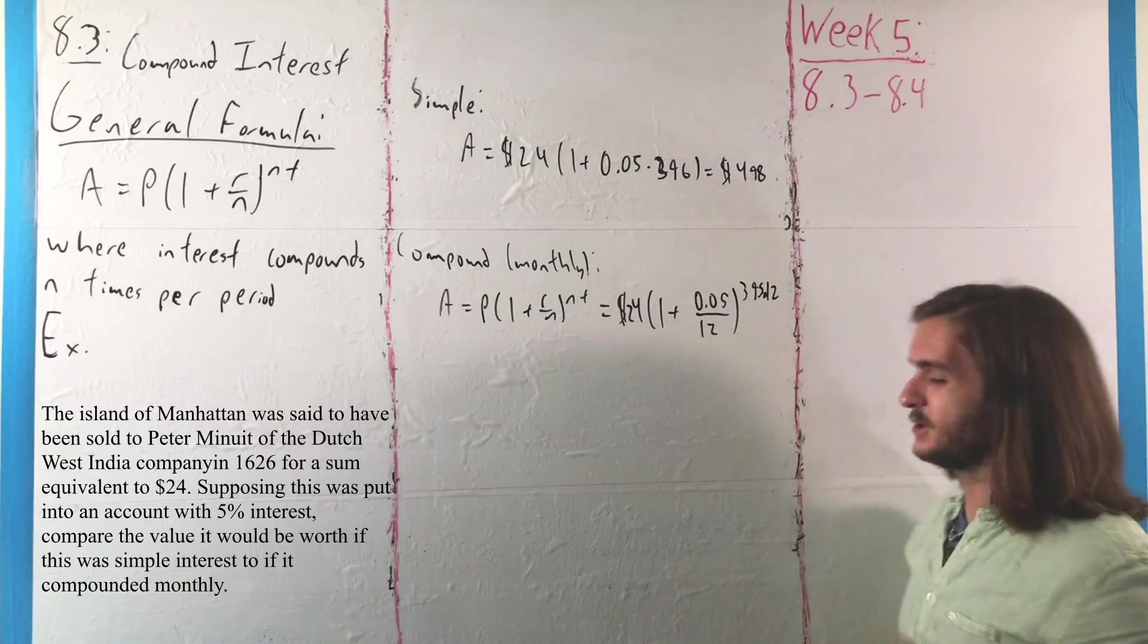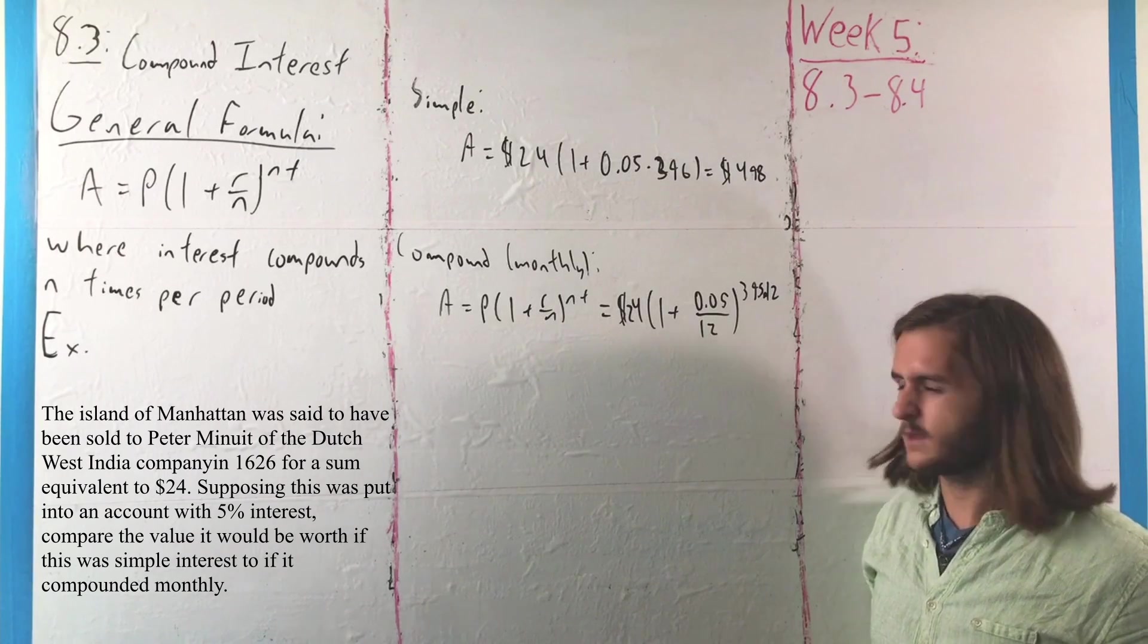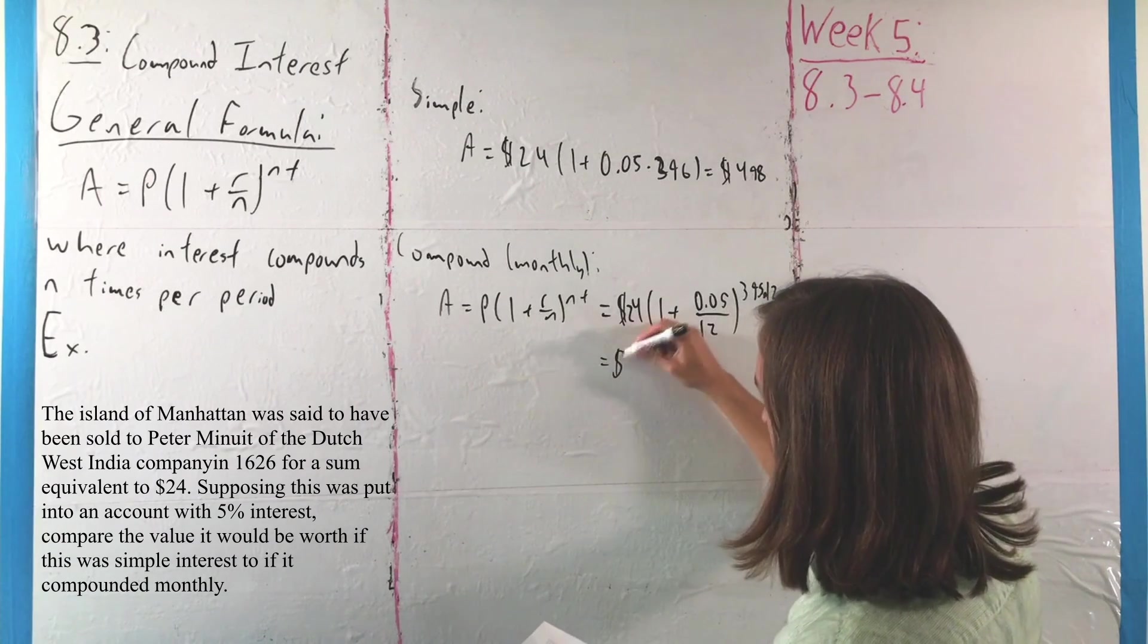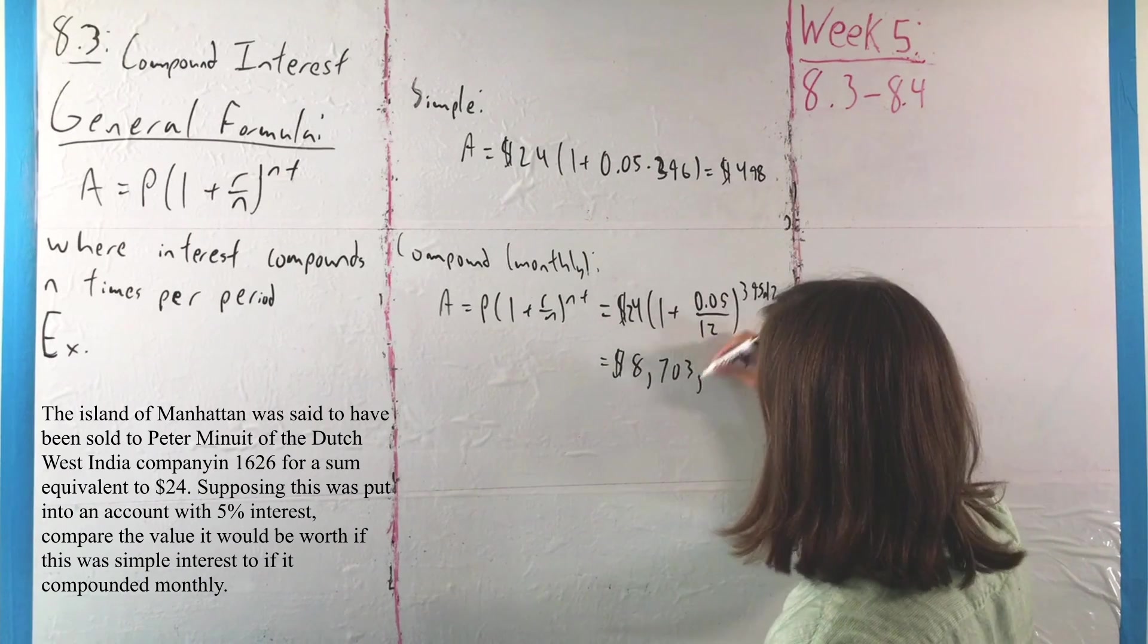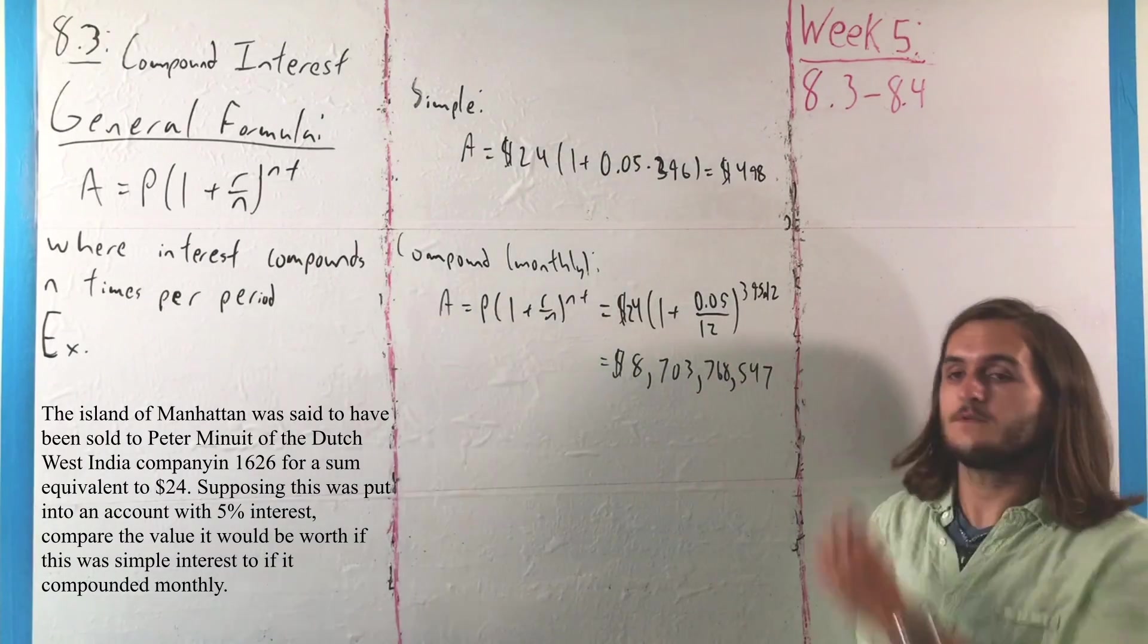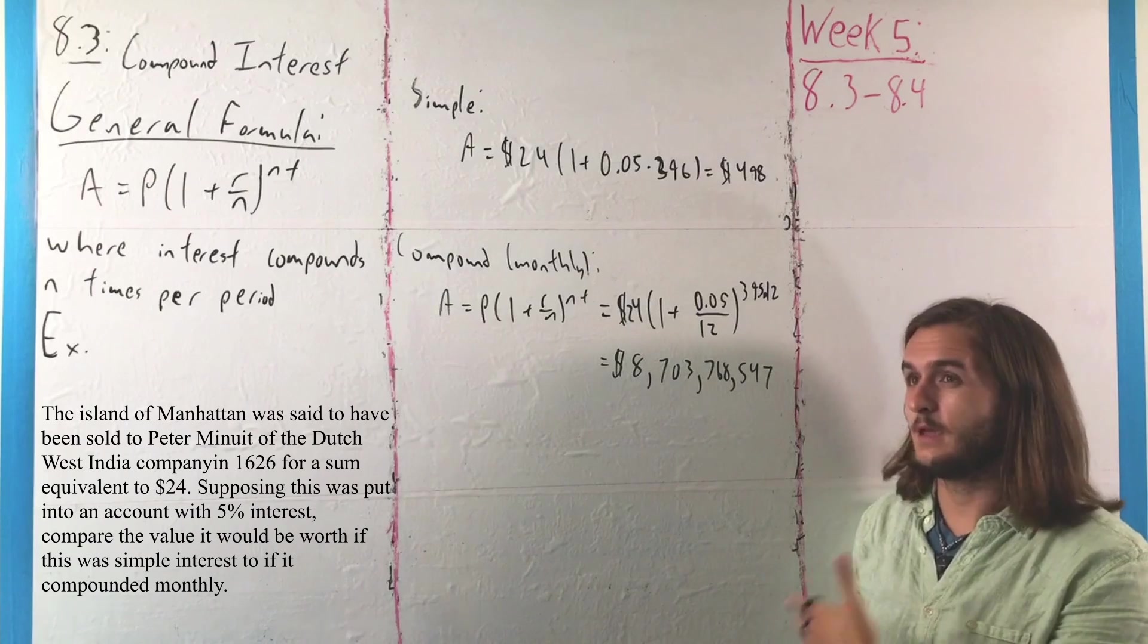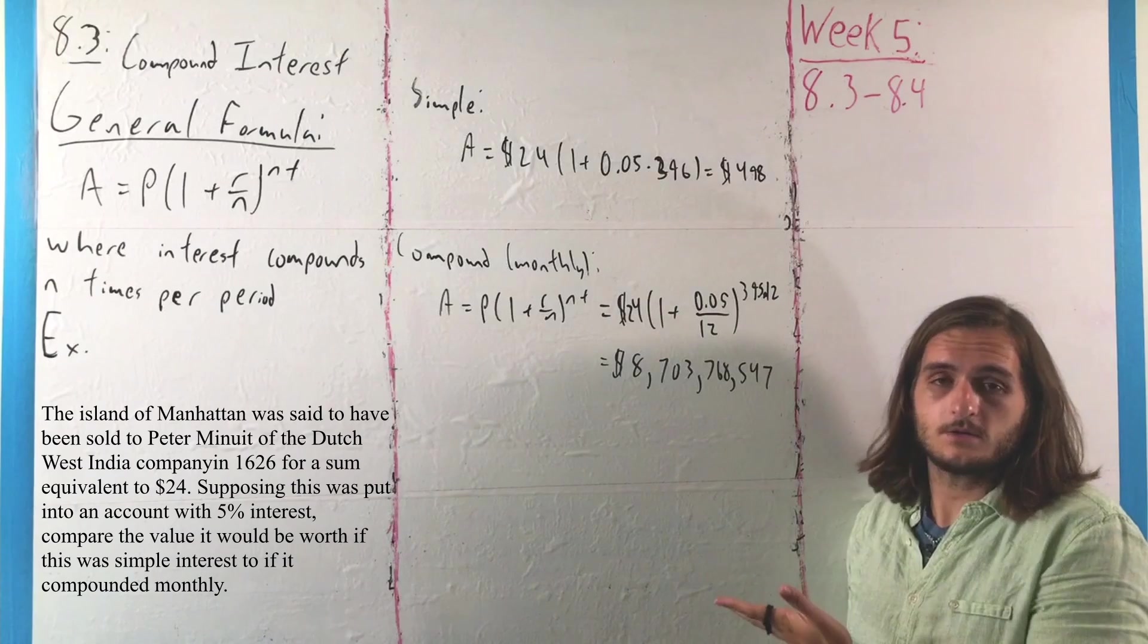Because we're going to end up in there with something that gets raised to over the, what would that end up being, like 4,000 power. Quite a lot. So much, in fact, that we will end up here with a value of $8,703,768,547. So hey, if they could make all of these unrealistic things happen, put their money into a compounding interest account that compounds monthly, a monthly compounding interest account, and that's the wording there, they'd be billionaires as a tribe.